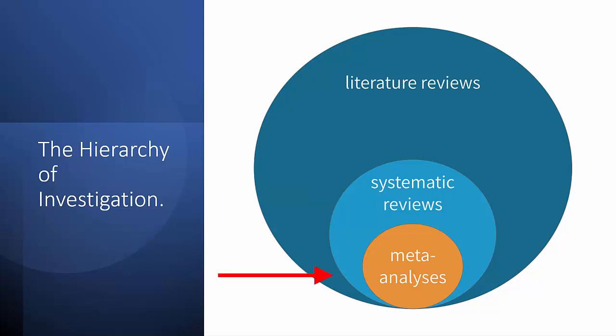A meta-analysis is often, but not always, the end point of a systematic review. It is where the results of those papers that survived your appraisal stage are effectively recombined or synthesized via a statistical process known as pooling. This produces a new or rather an enhanced set of results which can hopefully shed fresh light onto your original research question.